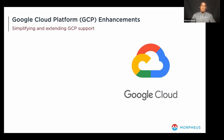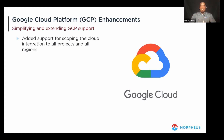For GCP support, in the 5.3.1 release we added support for scoping the cloud integration to all projects and all regions. This means the ability to add the integration within Morpheus and specify all projects in all regions, eliminating the need to add individual regions as part of the integration to avoid cloud sprawl within Morpheus. This is similar to the improvement made for the Azure integration in the 5.3.0 release.